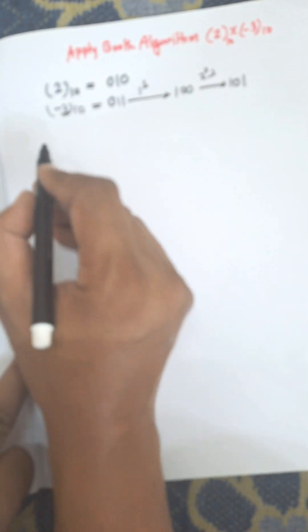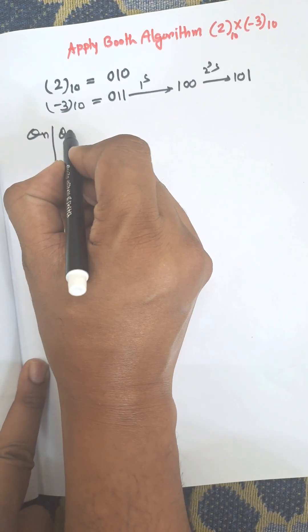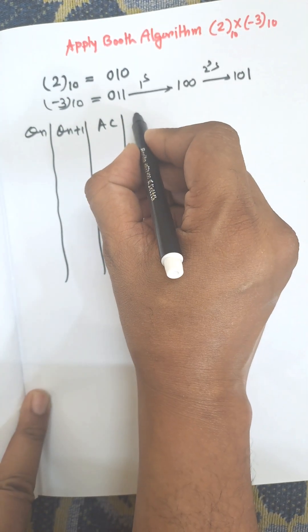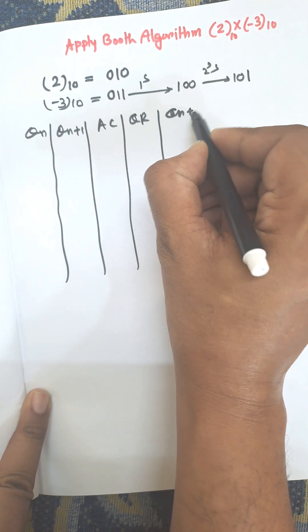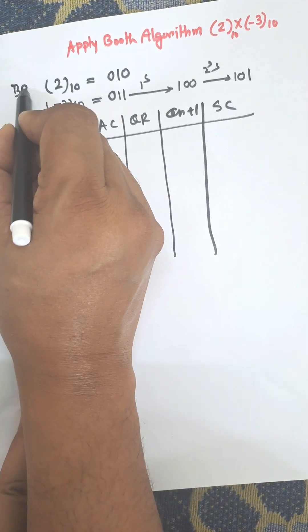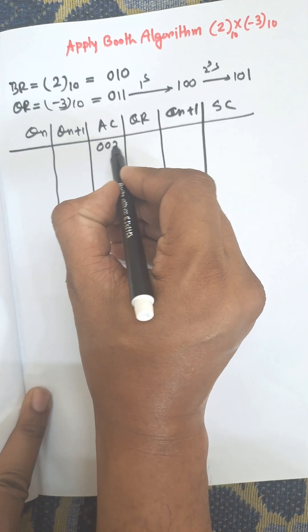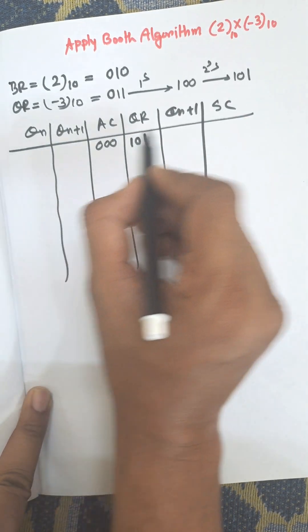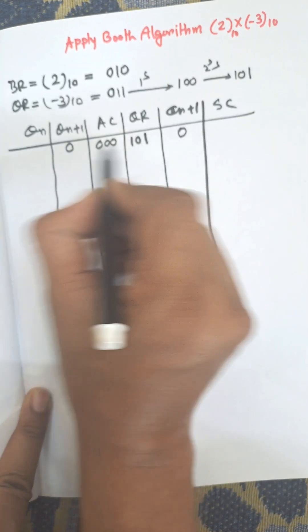Now we construct the table with columns Qn, Qn+1, AC (accumulator), the sequence counter, and number of bits. The multiplier (keyword/question register) is three bits: 1 0 1. Qn+1 initial value is zero, and Qn is the last bit of the multiplier register, which is 1.